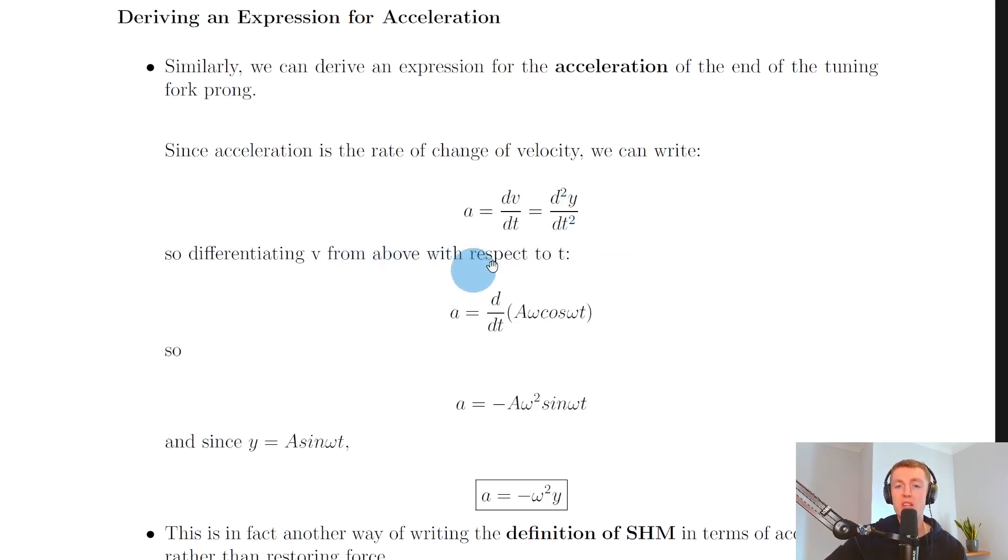So if you start with the expression for displacement y equals a sine omega t, where the displacement y equals 0 at its equilibrium position at time t equals 0, and if you differentiate that expression with respect to time, then you end up with a omega cos omega t.